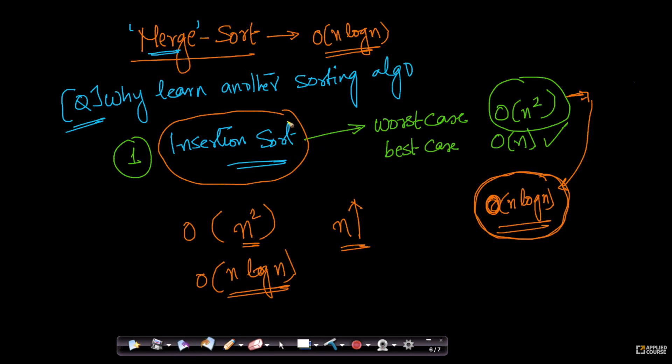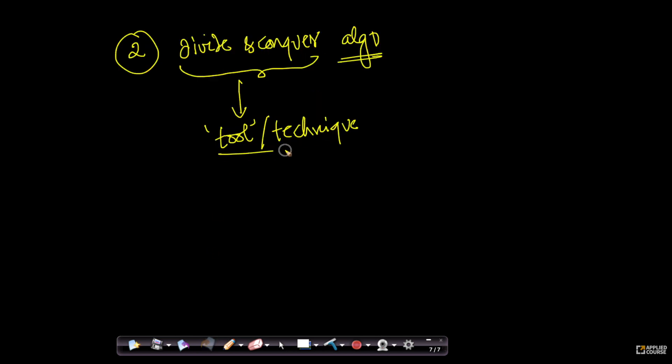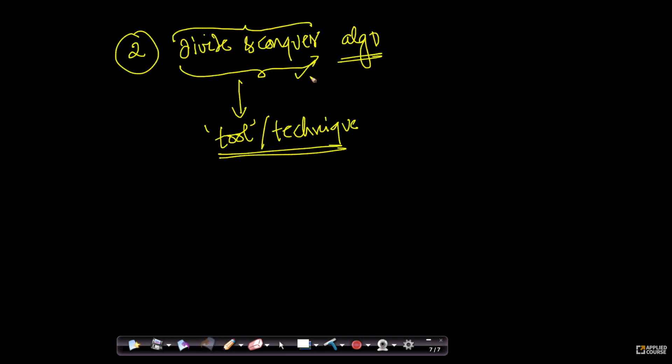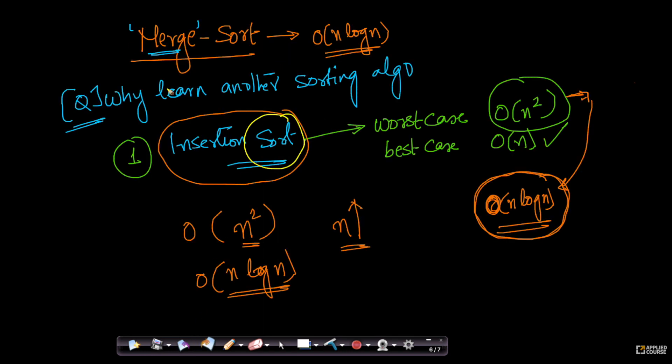Remember, we are solving a very simple problem of sorting. In the real world, you will have to solve many complex problems using data structures and algorithms. One of the tools which is extremely powerful in the real world is the divide and conquer strategy. We will introduce this strategy through merge sort and see it being applied in many places across various algorithms and data structures.